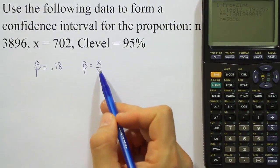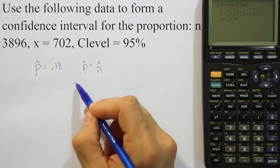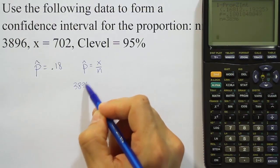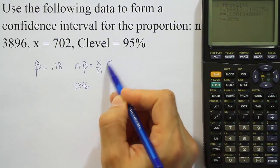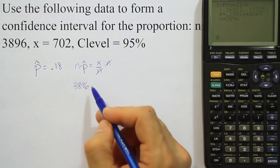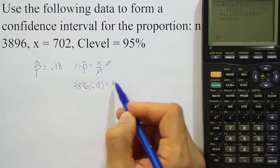...you could always determine x by saying that p-hat is equal to x over n, right? And then if I want to solve for x to figure out what it is, I would just do n times p-hat. So our n is 3,896. So I multiply both sides by n here. That cancels out. So we get n times p-hat. So the p-hat is 0.18. That will give us an answer for x.